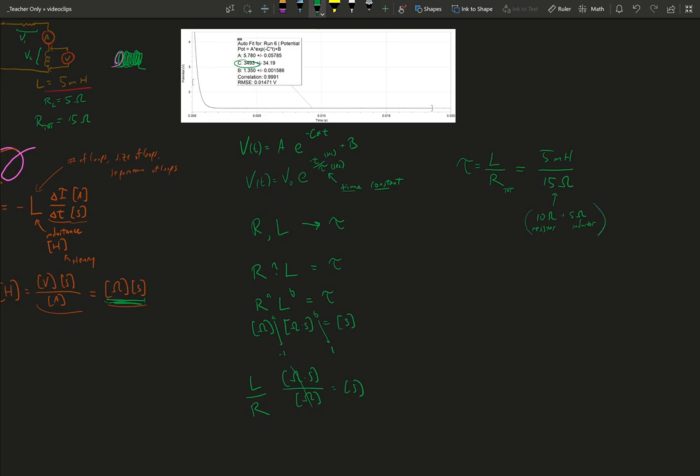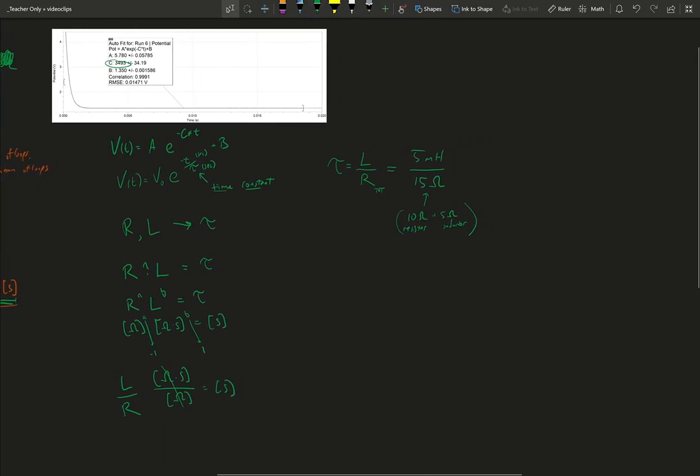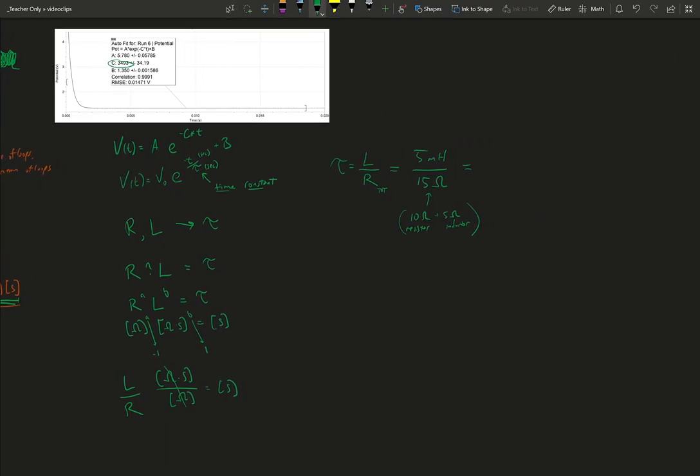I can't divide 5 millihenries by 15 ohms. I need to do a unit or a metric prefix change. This would be 0.005 Henries divided by 15 ohms.